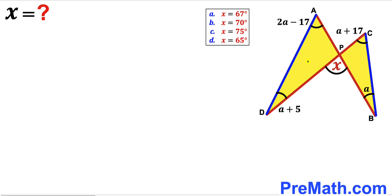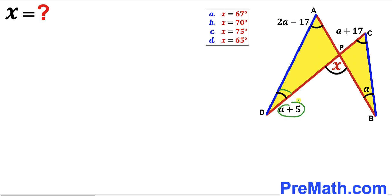Moreover, this angle D, A, P is 2a minus 17, and this angle A, D, P is a plus 5.